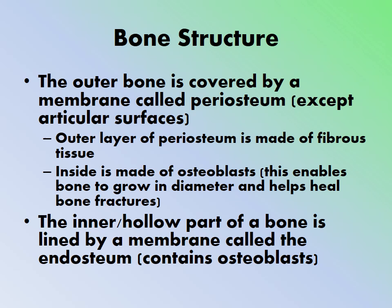The outer bone is covered by a membrane called the periosteum, except at articular surfaces such as joints. The outer layer of the periosteum is made of fibrous tissue, while the inside is made up of osteoblasts. This enables the bone to grow in diameter and helps heal bone fractures. The osteoblasts on the inside of the periosteum allow bones to increase in diameter — for example, as a growing puppy's bones enlarge.